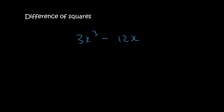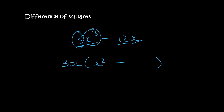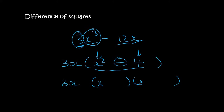Here there's no perfect square directly, because 3 is not a square number. But remember step 1: always see what you can take out. The number 3 fits into both 3 and 12, and we also have 3x's and 1x, so we can take out 3x. That leaves 3x(x² - 4). Now x times x gives x², and 2 times 2 gives 4, with a minus between them. So we keep 3x in front and open two brackets: 3x(x + 2)(x - 2).